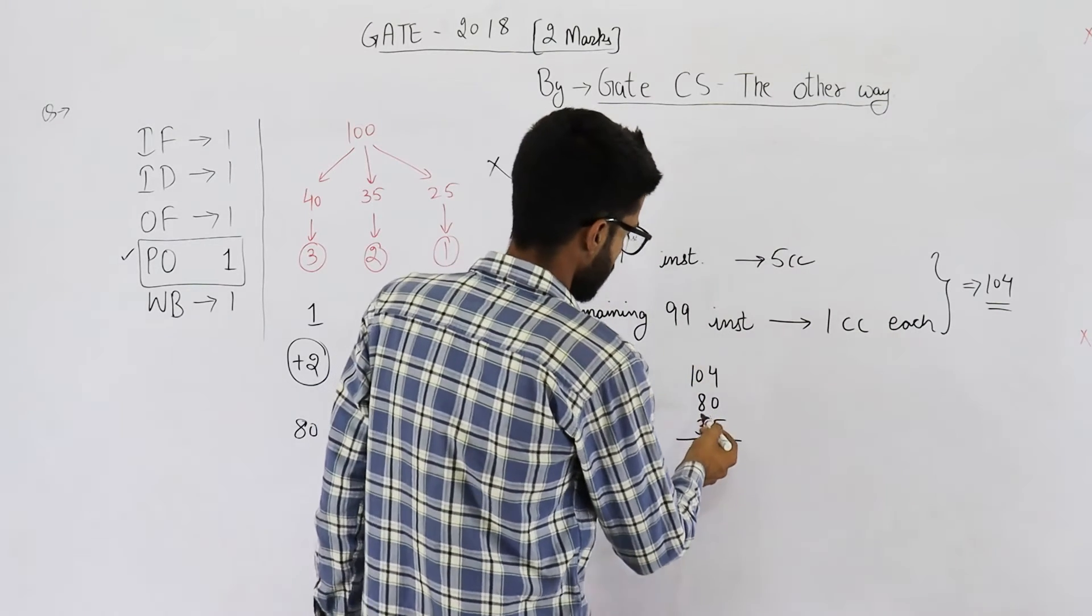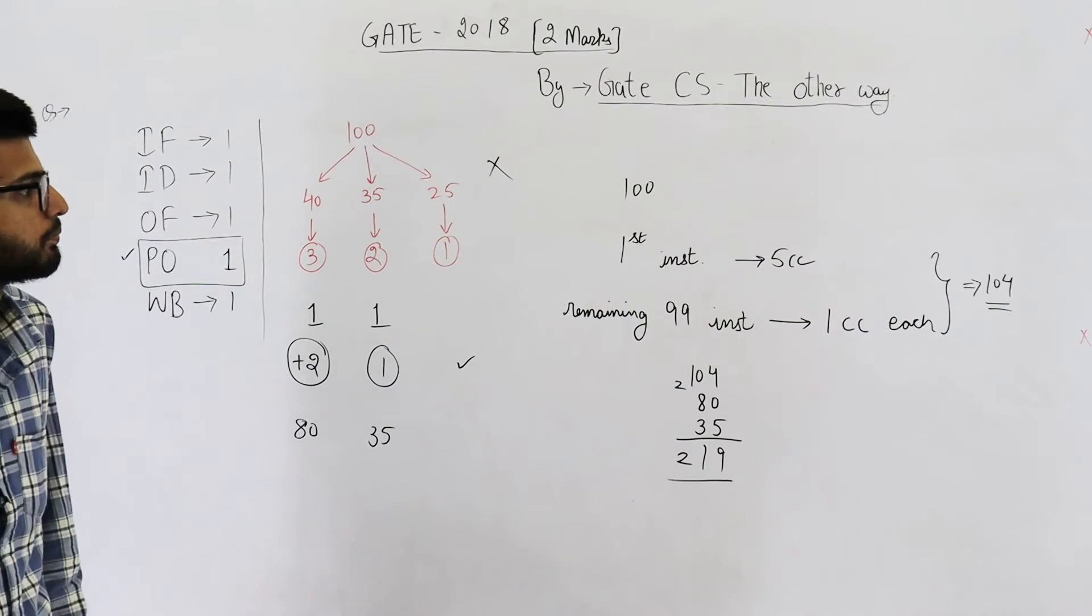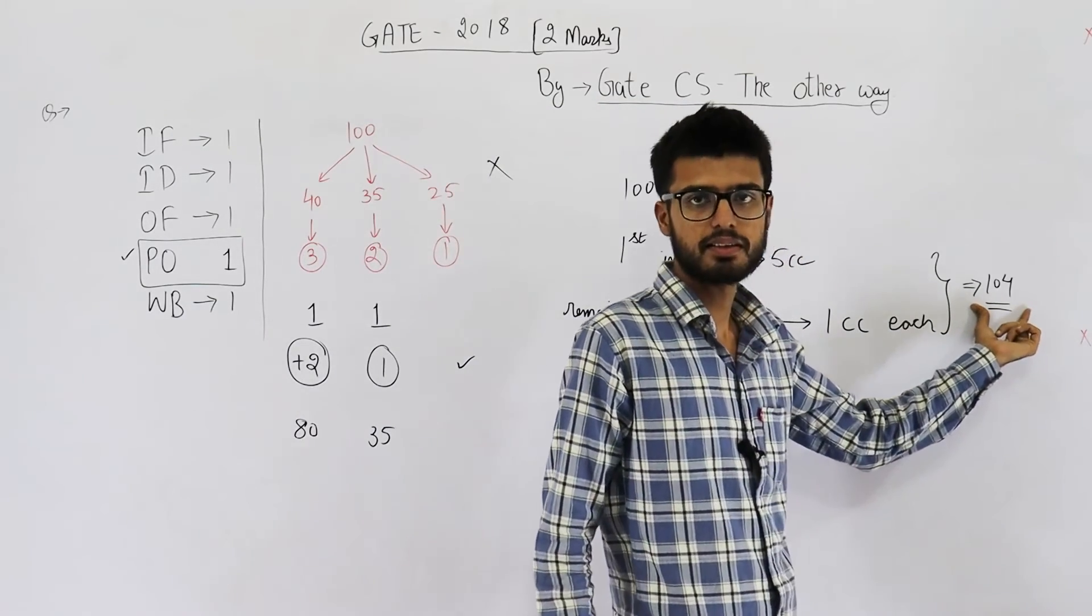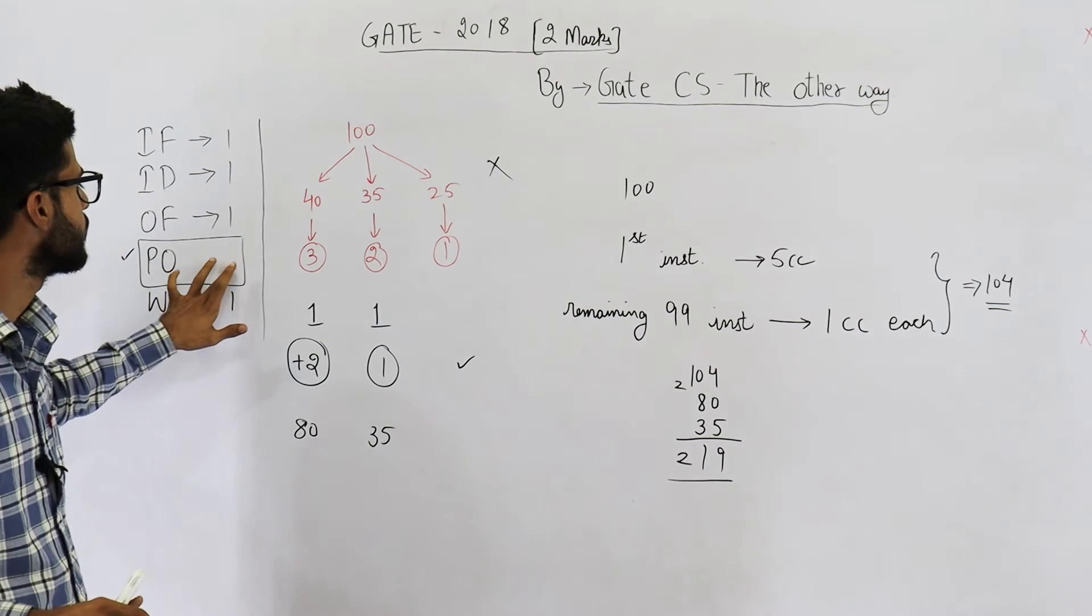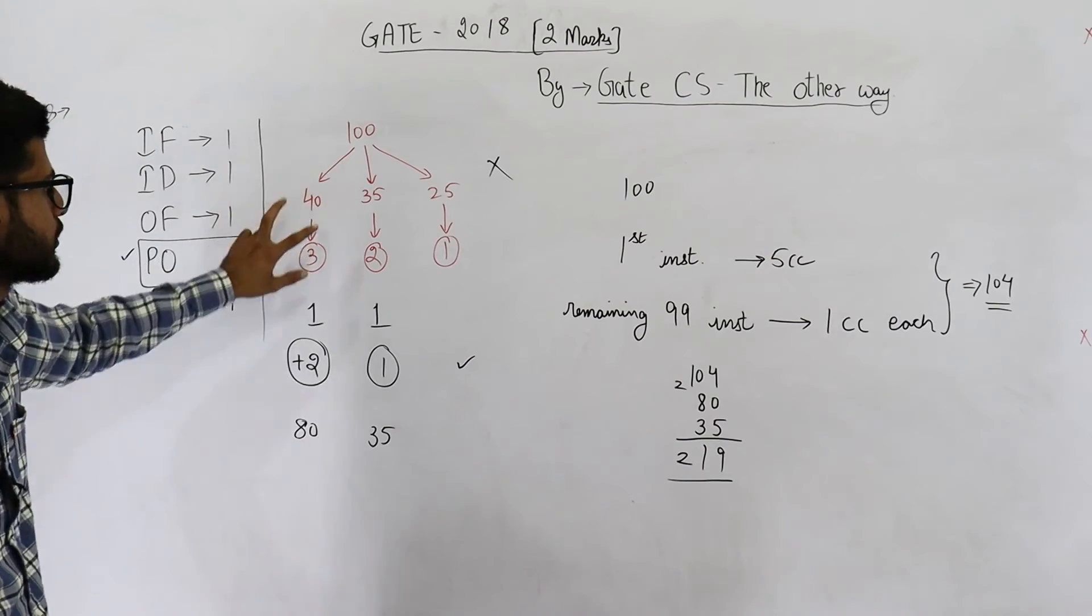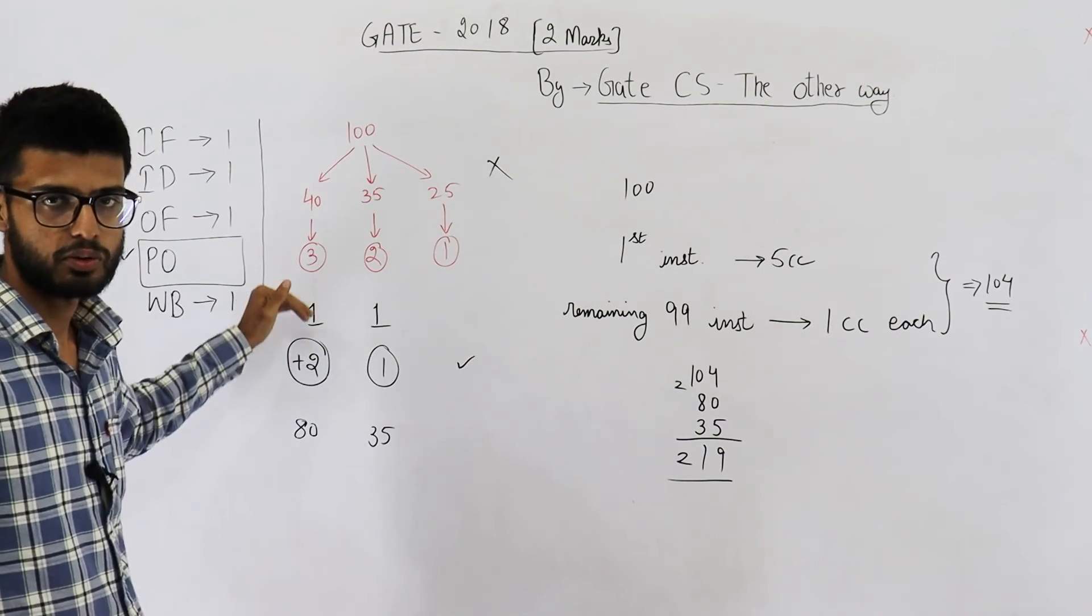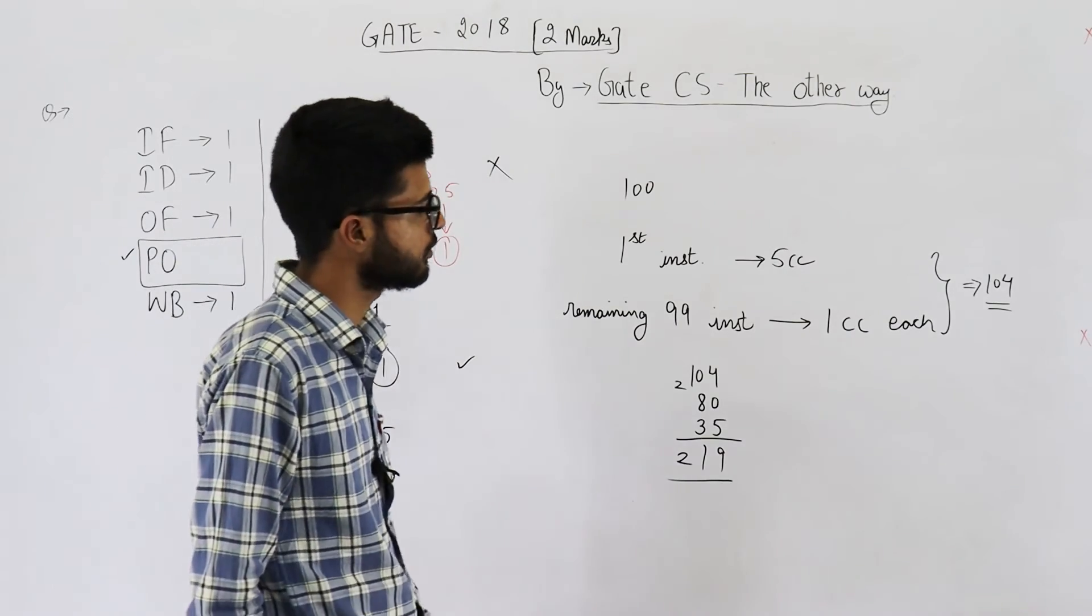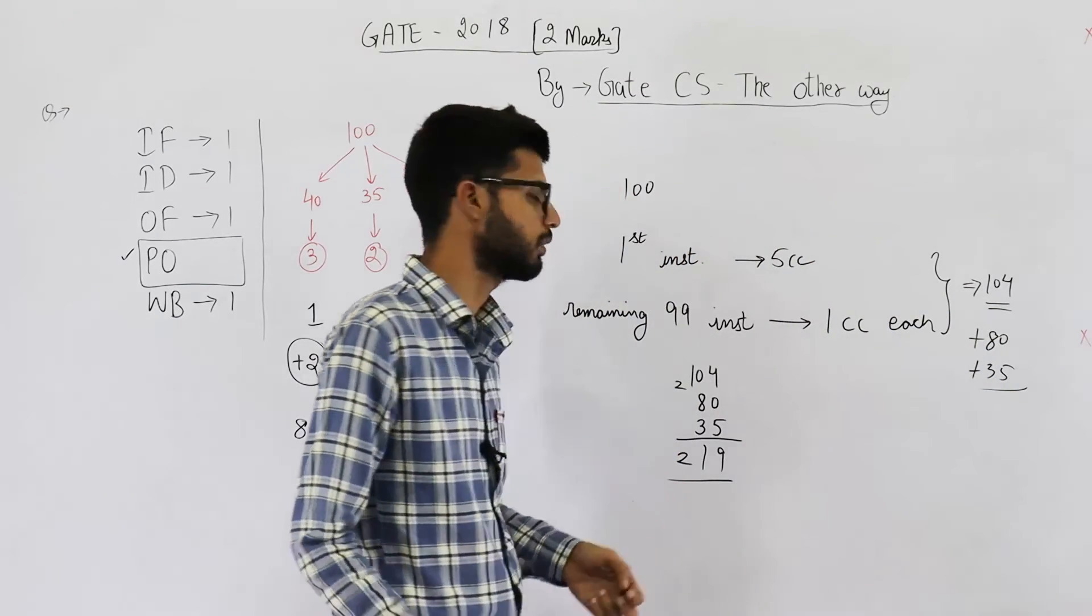So this is 9 and 8, 9, 10, 11 and 2. That means your answer is 219. 219 clock cycles not instructions. 104 clock cycles are required if this PO stage takes 1 clock cycle. But actually this PO stage requires 3 clock cycles, 3 clock cycles for 40 instructions. And for these 40 instructions, 1 clock cycle has already been counted in those 104 clock cycles. So we need to add 2, 40 times, 2 clock cycles for each of these 40 instructions. Similarly, you can just see the explanation here also. That means 104 plus 80 plus 35 is the answer which comes out to be 219.